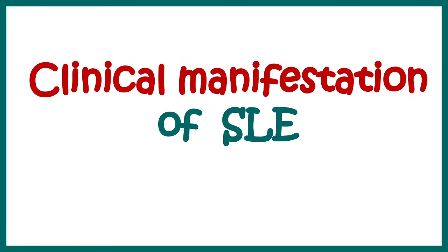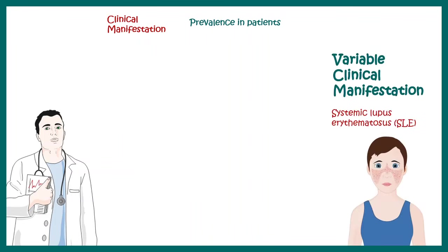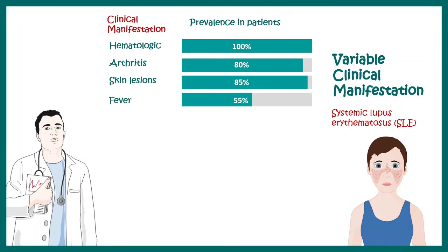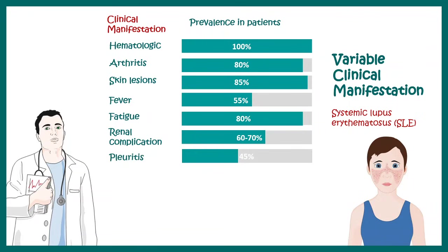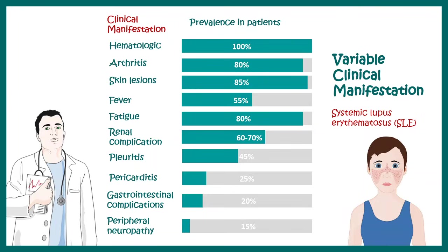Now let's talk about the clinical manifestation of lupus. Clinical manifestation is highly variable — different patients show different signs and symptoms. Hematologic complications, reddening of the skin, and lysis of RBCs are very prevalent, occurring in almost 100% of patients. Arthritis is present in 80%, skin lesions in 85%, fever in 55%, fatigue in 80%, renal complications in 60-70%, pleuritis in 45%, pericarditis in 25%, gastrointestinal complications in 20%, and peripheral neuropathy in 15%.